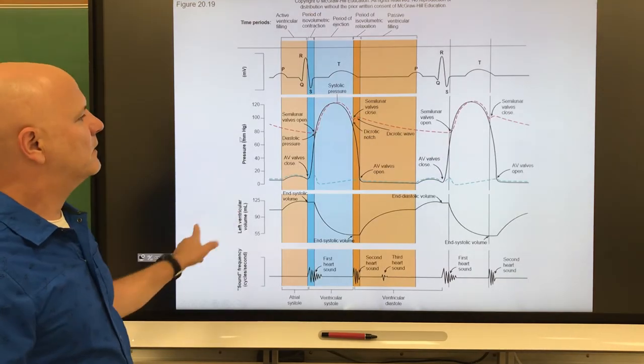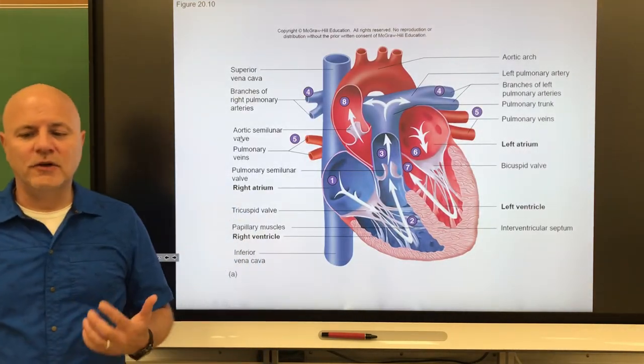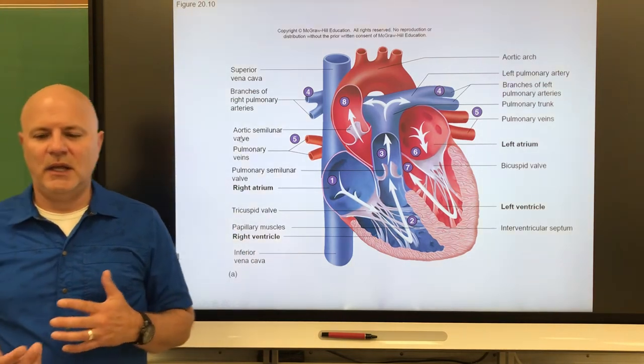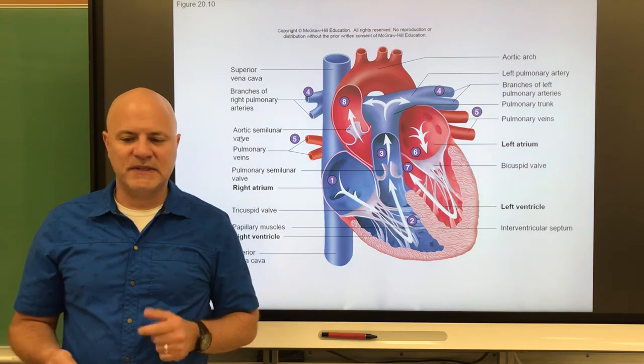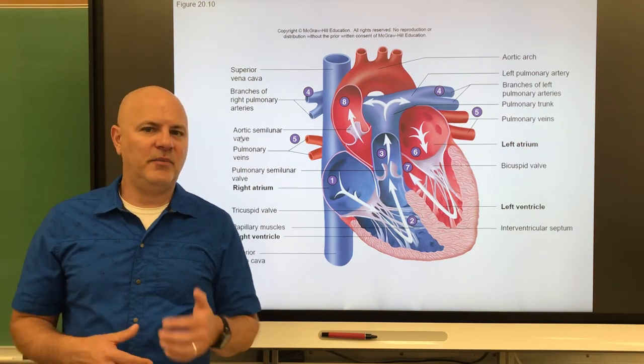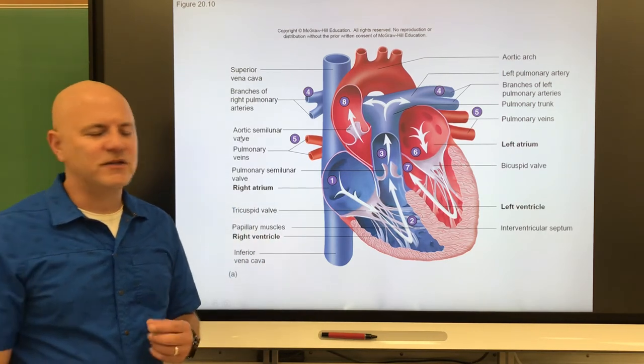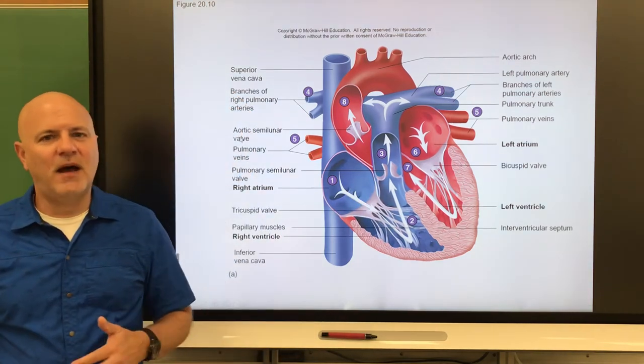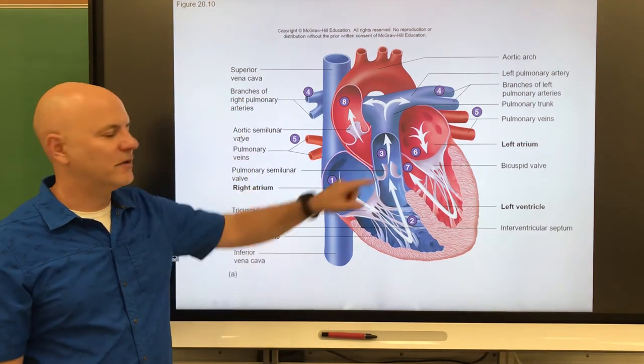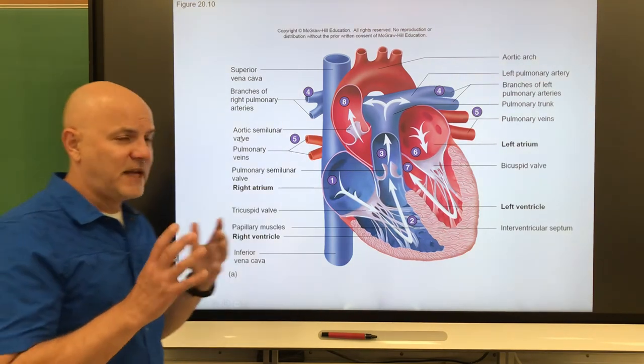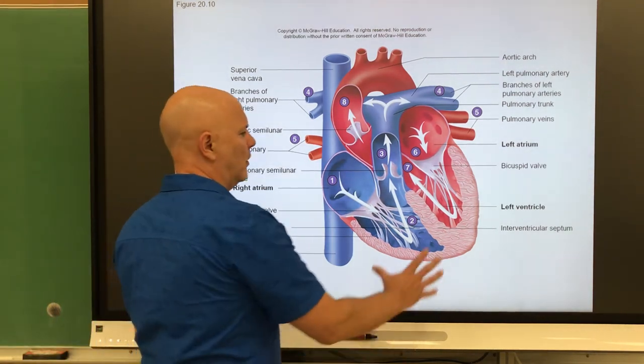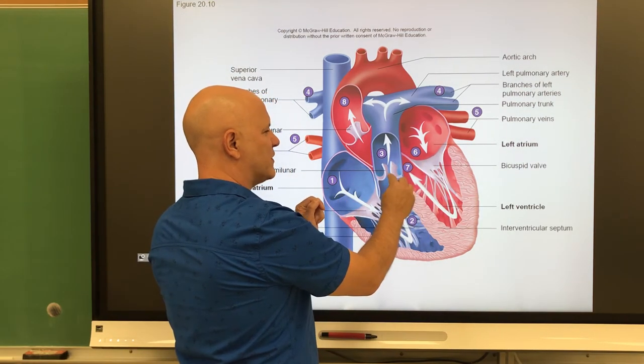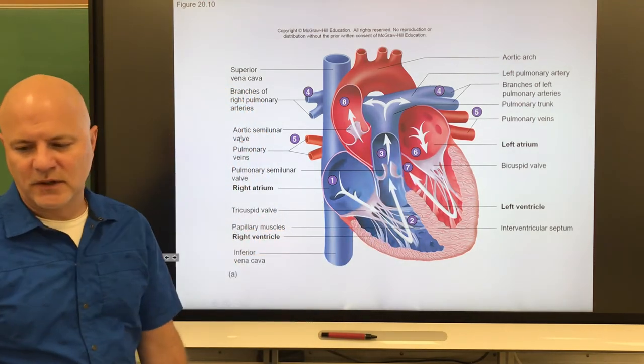Let's take a look at heart sounds. Heart sounds are due to vibrations of heart tissue associated with the closing of the valves. You can think about these as the lub-dup sounds. The lub is the first sound, the dup is the second sound. So our heart goes lub-dup, lub-dup, lub-dup. That lub sound or the first sound is due to the closing of the AV valves. And the dup sound is due to the closing of the semilunar valves. All this has to do with the ventricles. When the ventricles are contracting, those AV valves are closing. And when the ventricles finish their contraction, the semilunar valves are going to close.